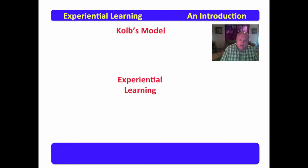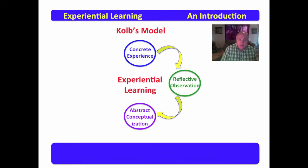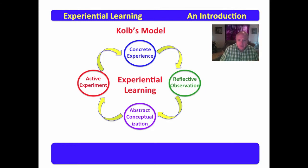In this portion, we're going to examine Kolb's model for experiential learning, which starts with concrete experience, then moves into reflective observation. After reflective observation follows abstract conceptualization, and after abstract conceptualization follows active experiment, which then moves back into concrete experience.